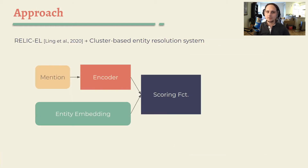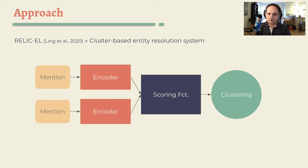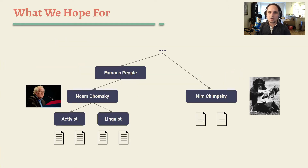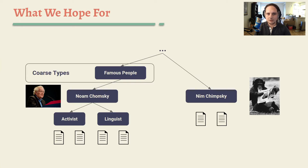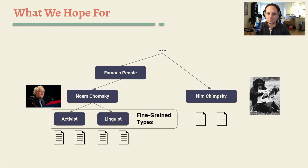In this work, we investigate whether entity linkers can be modified to resolve mentions of entities that are not known ahead of time. The main idea of our approach is to discard the pre-specified collection of entities and their learned representations, and instead feed encoded mentions into a hierarchical agglomerative clustering algorithm to recover entity clusters. Our hope is that the resulting cluster tree will not only group mentions referring to the same entity, but also capture type information about entities at higher and lower levels of the cluster tree.